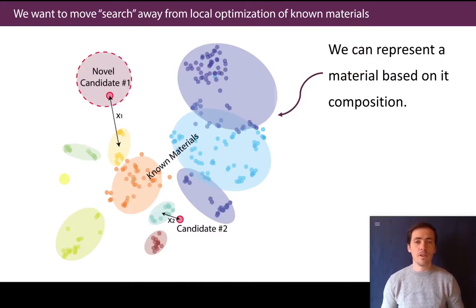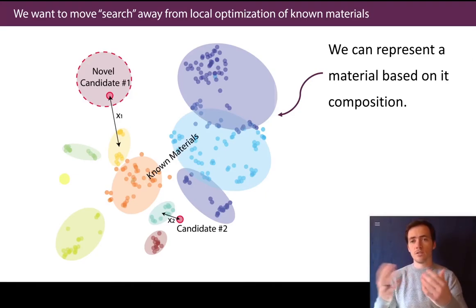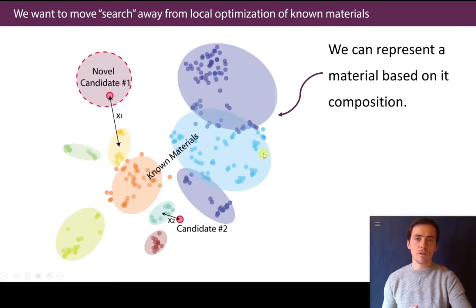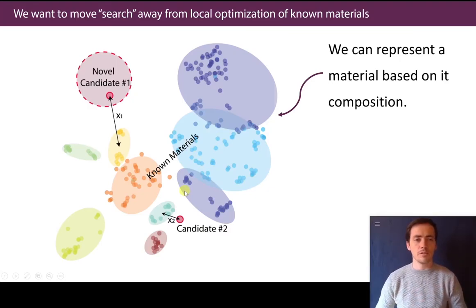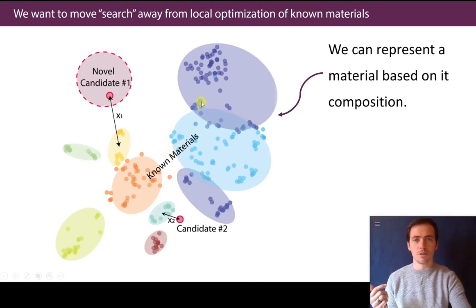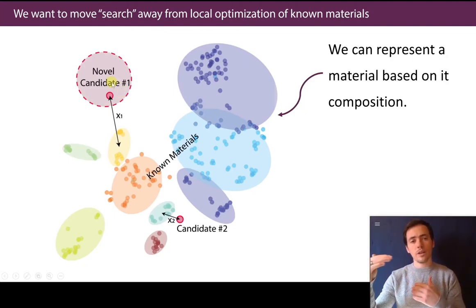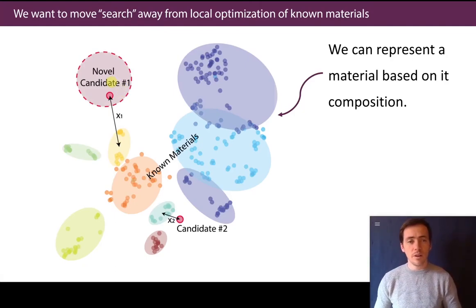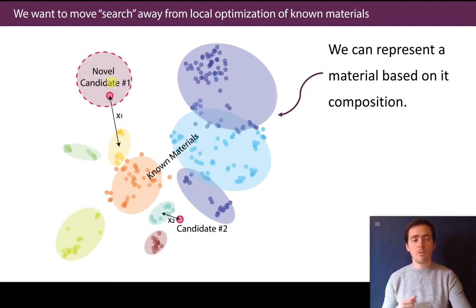Something we can do with this is move away from local optimization of known materials. Here's a bunch of plots for thermoelectrics — these clusters represent known families of materials, about 10 or 11 families that everyone looks at. But what we'd love to discover is not just some new Zintl or Skutterudite with average properties; we want to find some new chemistry, far away in compositional space — something unexpected where new scientific discovery comes from.